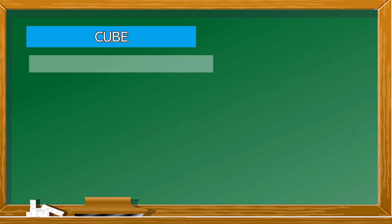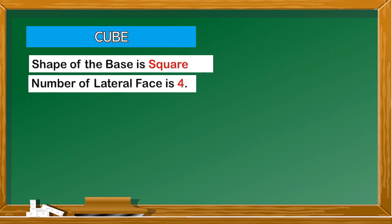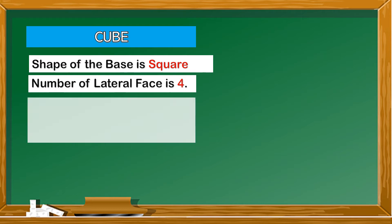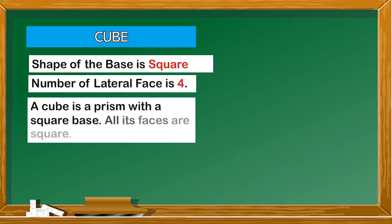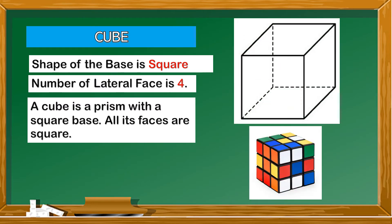Cube. The shape of the base is a square and the number of lateral faces is 4. A cube is a prism with a square base, and all its faces are squares. Here is an example of a cube.